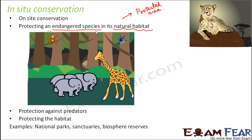In India there are more than 600 protected areas. In terms of protected areas, there are national parks, animal sanctuaries, and biosphere reserves — all examples where the in-situ conservation approach is being followed. We will talk about each of these in detail a little later.